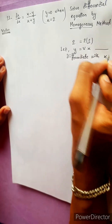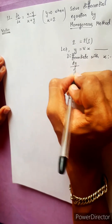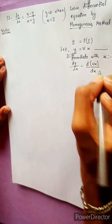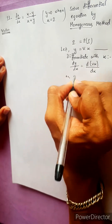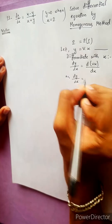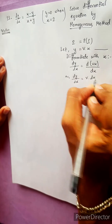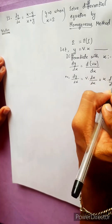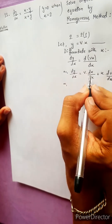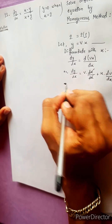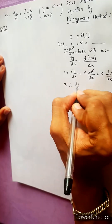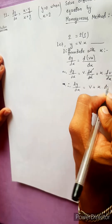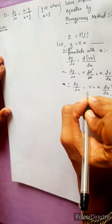Differentiate with respect to x. dy/dx equals — differentiating y = vx — we get dy/dx equals v plus x·dv/dx. After the v terms cancel, therefore dy/dx equals v plus x·dv/dx.